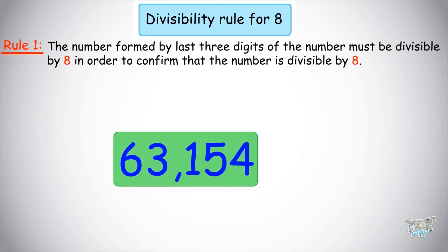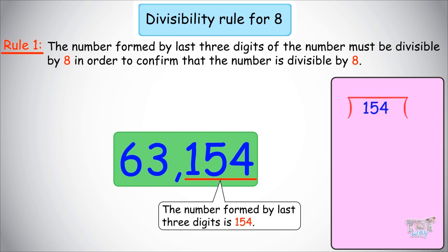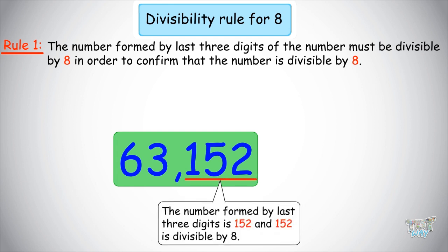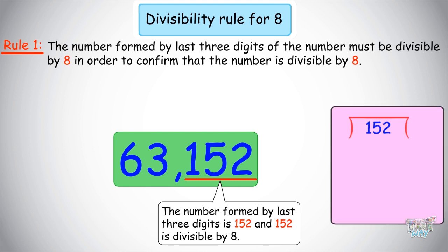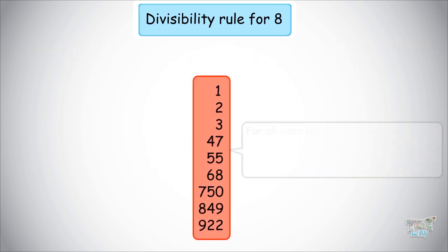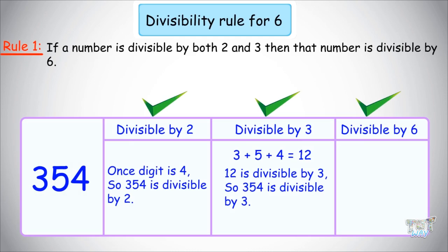Next number is 63,154: the last 3 digits form 154, and 154 is not divisible by 8, so this number is not divisible by 8. Another number is 63,152: the last 3 digits form 152, and 152 is divisible by 8, so the number is divisible by 8. So friends, we have learned that for any number with more than 3 digits, check if the last 3 digits are divisible by 8. For numbers with 1, 2, or 3 digits, use actual division. We have learned the divisibility rules for 5, 6, and 8.